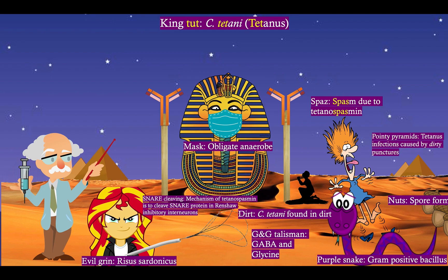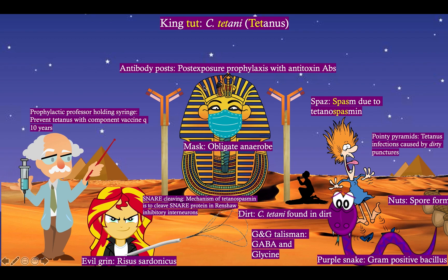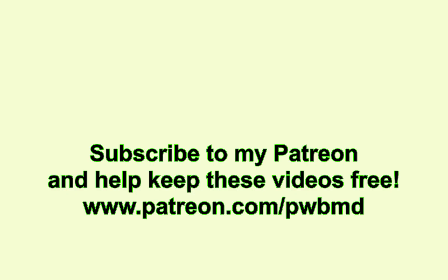The pointy pyramids in the background remind you that tetanus infections are caused by dirty, sandy punctures — things like stepping on a rusty nail, scraping your arm against barbed wire, or an old dilapidated car in a junkyard. Our professor of Egyptology, the prophylactic professor, is holding a syringe to remind you that we can prevent tetanus with a component vaccine every 10 years. Notice the antibody posts surrounding King Tut, reminding you that we can give immune globulin or antitoxin antibodies as post-exposure prophylaxis for tetanus.